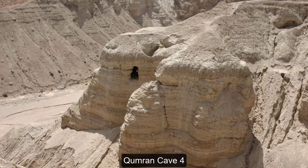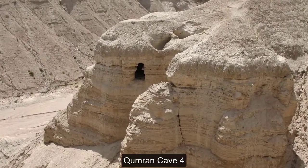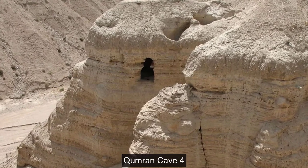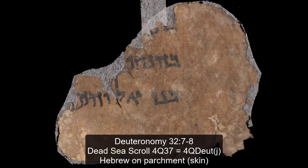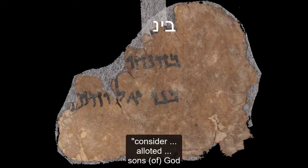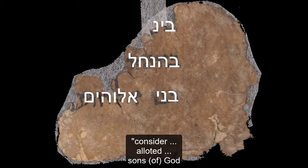All this began to change in September of 1952, when a parchment fragment was found in Cave 4 of Qumran containing four words from Deuteronomy 32 verses 7 and 8: 'consider,' 'allotted,' 'sons,' and 'God.' This makes it certain that the Greek translation 'Sons of God' or 'Angels of God' was translated from the earlier form of the Hebrew text of Deuteronomy 32:8.